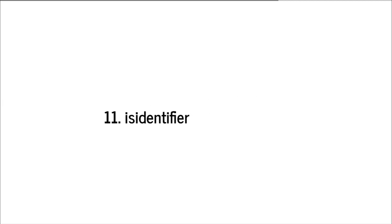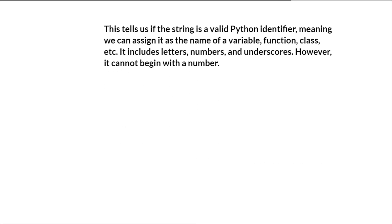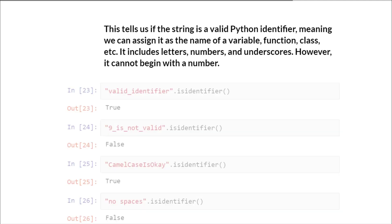Then we have isidentifier, which tells us if a string is a valid Python identifier — meaning we can assign it as the name of a variable, function, class, etc. It includes letters, numbers, and underscores; however, it cannot begin with a number. For example, this is a valid identifier, whereas this is not because it begins with 9. Another is not valid because it has a space, and we can't have spaces when defining an identifier in Python.